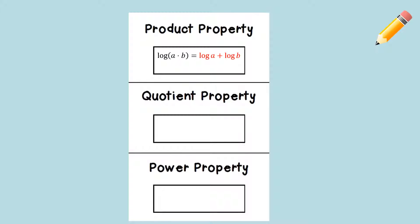The product property says that we can break up a log that's being multiplied. So if we have log base 10 of A times B — something times something — we can break that log into the log of the first thing plus the log of the second thing. For the quotient property, if we're dividing two numbers or expressions in a log, we can break it up into the log of the numerator minus the log of the denominator.